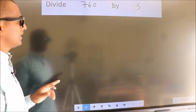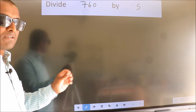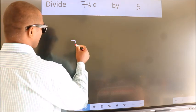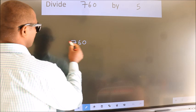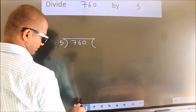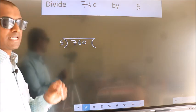Divide 760 by 5. To do this division we should frame it in this way. 760 here, 5 here. This is your step 1.